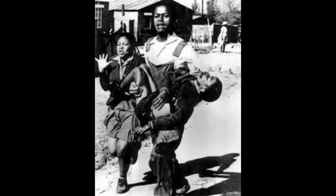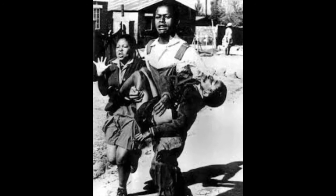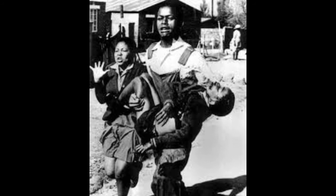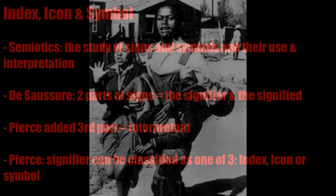Now, let us take the iconic photograph of Mbuyisa Makhubo carrying a fatally wounded Hector Pieterson. We know that it depicts Makhubo, a boy carrying an unconscious schoolboy Pieterson, through the streets of Soweto, while another school child — Pieterson's sister — is in visible distress as she looks on. The picture symbolizes the defiance of school children who stood up against the state to protest against unjust education policies. When it was published, the photo showed the world the horrors occurring in the townships of apartheid South Africa. Hector Pieterson became the face of the black youth who were being arrested and killed because they were daring to defy the state.